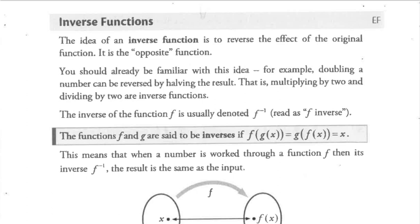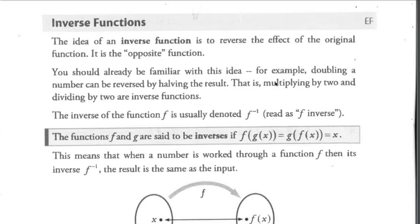The inverse of squaring is square rooting, so we're familiar with some ideas of inverse functions already. Here's the example I've got written down here. For example, doubling a number can be reversed by halving the result. That is, multiplying by 2 and dividing by 2 are inverse functions.